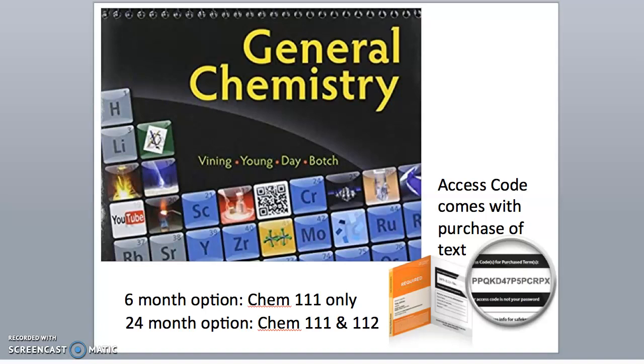At the bookstore, you will have the option of purchasing a 6-month or 24-month access code. This code will be contained within the textbook and can be entered anytime during or after the free trial period. Purchase the 6-month code if you only need Chem 111 and you are confident that you are going to pass the course with your first attempt.